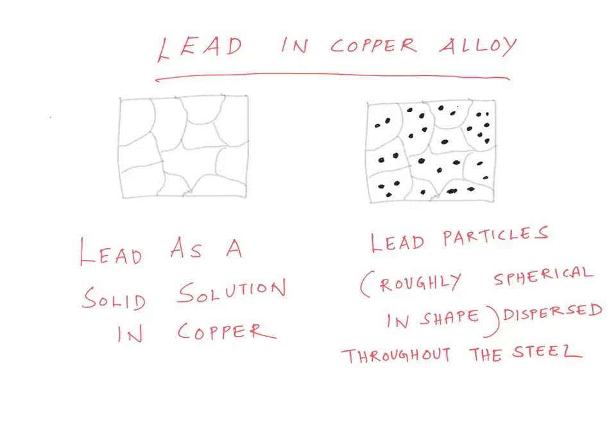Here the parent metal is copper and we are adding lead. Lead is added in steels to improve machinability. In this thought experiment, initially we are adding a certain amount of lead into the alloy.